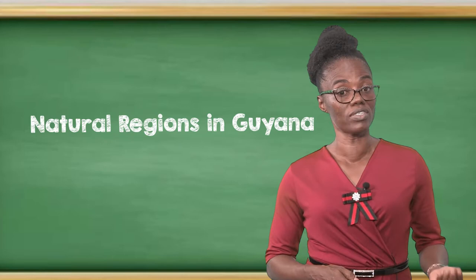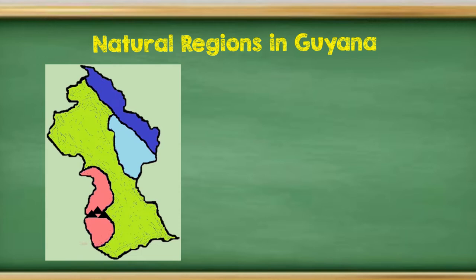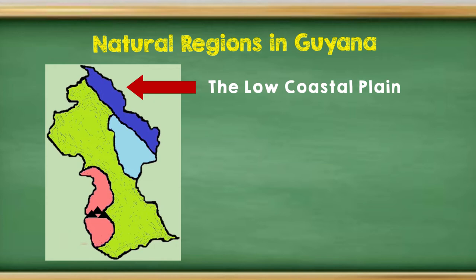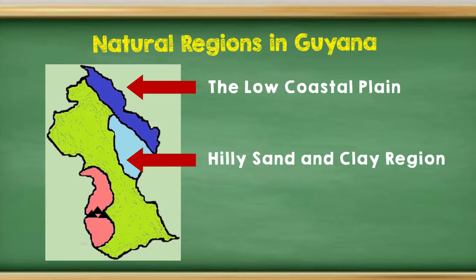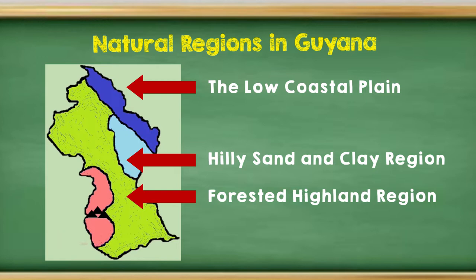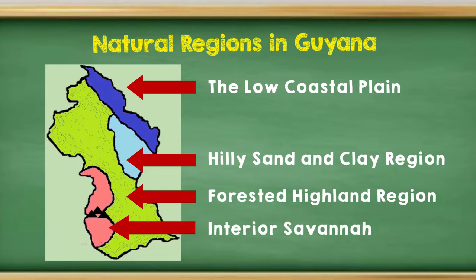Natural regions in Guyana. There are four natural regions in Guyana. They are the low coastal plain, represented by the dark blue; the hilly sand and clay, represented by the light blue on the map; the forested highland region, represented by the shade of yellow on the map; and the interior savannah, represented by the shade of pink on the map of Guyana.